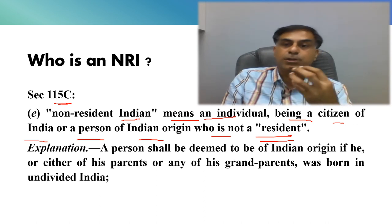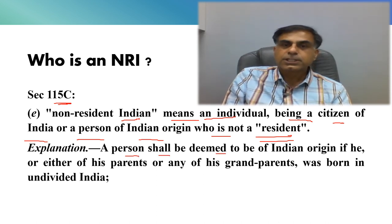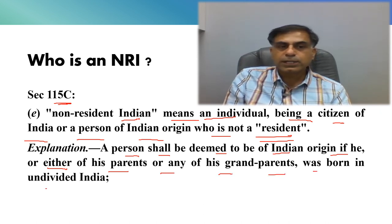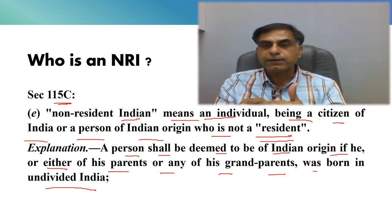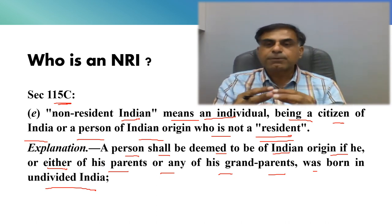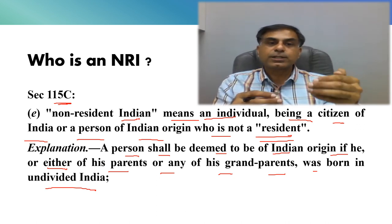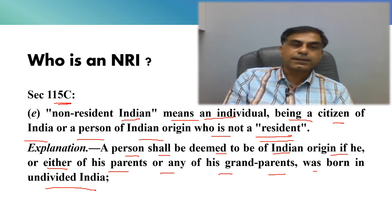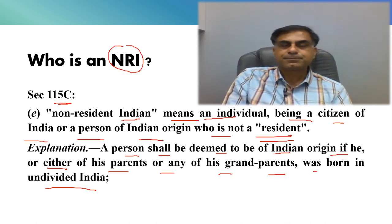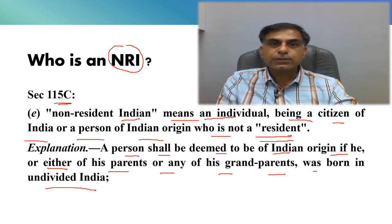Now the question comes: who is a person of Indian origin? There is an explanation provided beneath this clause saying that a person shall be deemed to be of Indian origin if he, or either of his parents, or any of his grandparents was born in undivided India. Sometimes people leave their citizenship of India because they have got some PR or permanent residency outside India. In such a case, even if they are not a citizen, they can be looked at with reference to whether they are a person of Indian origin. So when I use the term NRI, I am covering all non-residents who are either citizens of India or persons of Indian origin.